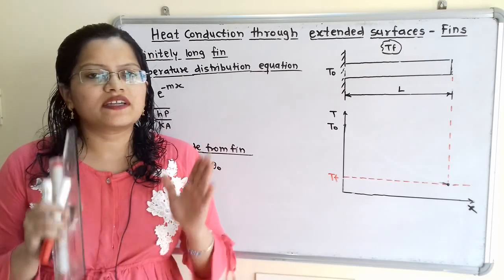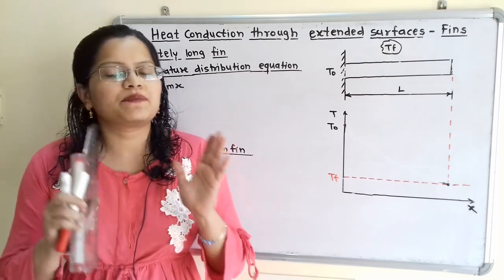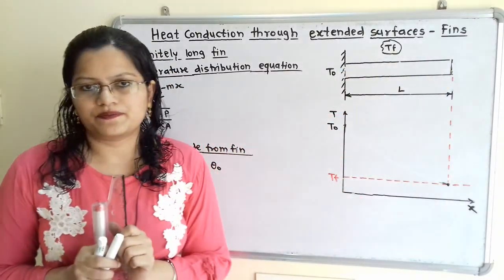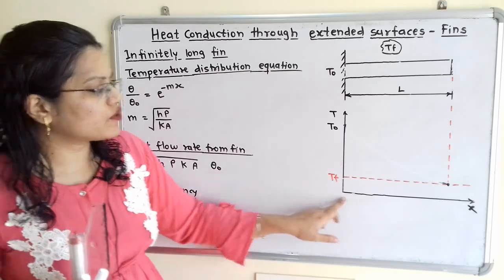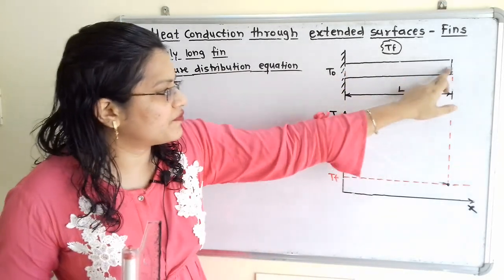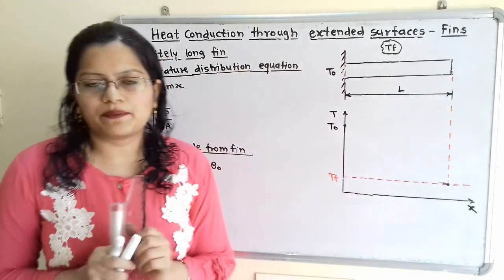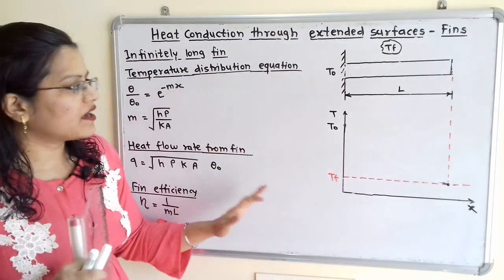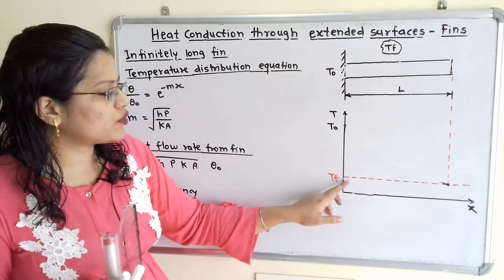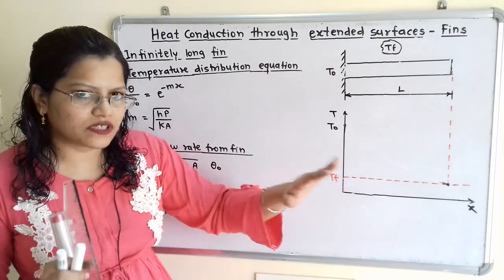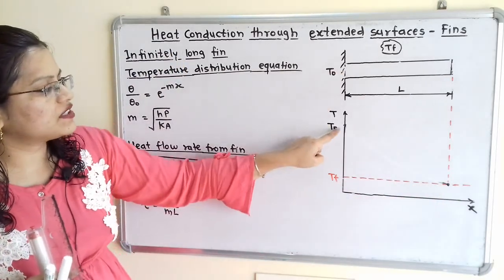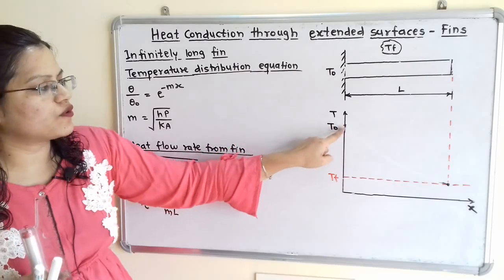We will understand the temperature distribution along the length of the fin by plotting a graph. On the horizontal axis we plot the distance x from the base of the fin, and on the vertical axis we plot the temperature. The surrounding temperature T_F is lower and remains constant, shown as a horizontal line. The temperature at the base of the fin is T_O, which is higher.